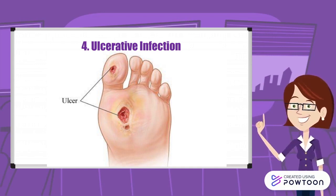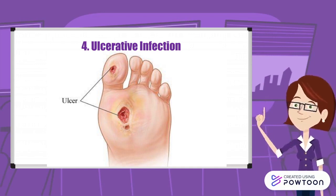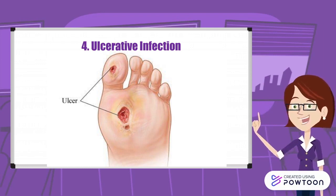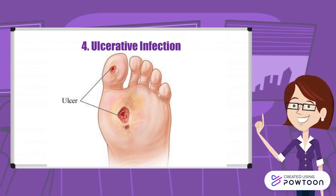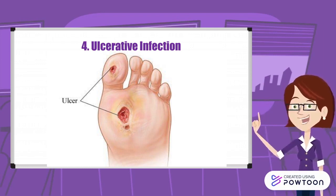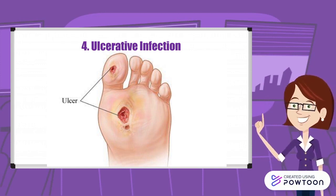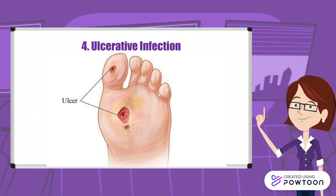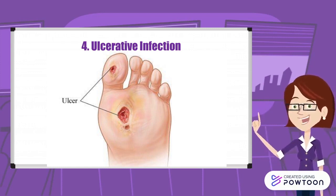The last type is ulcerative infection. It is a rare type of athlete's foot. Sometimes feet develop ulcers and sores that are vulnerable to bacterial infection. The ulcer may ooze discharge and can be very painful.